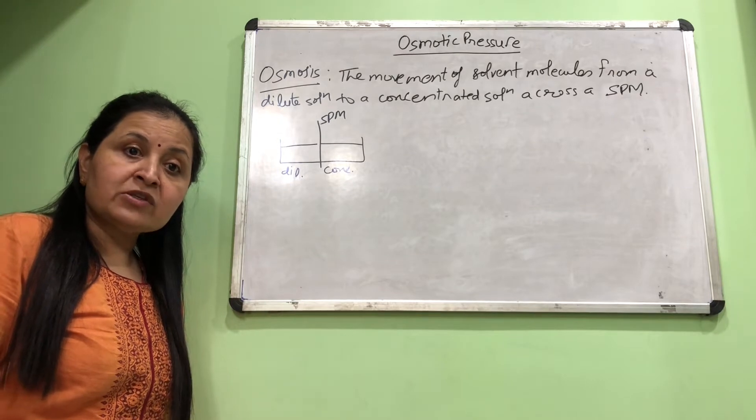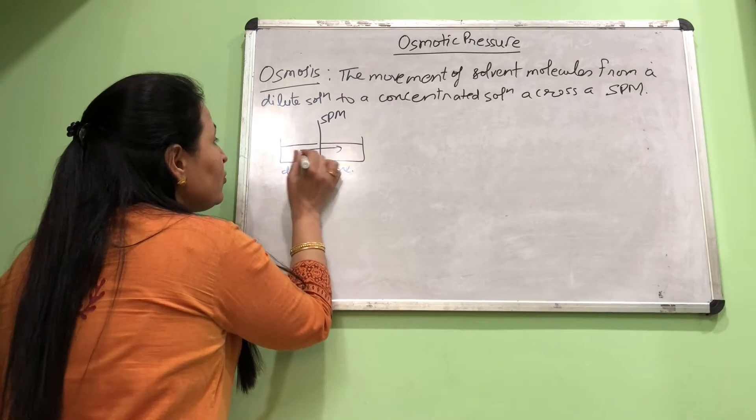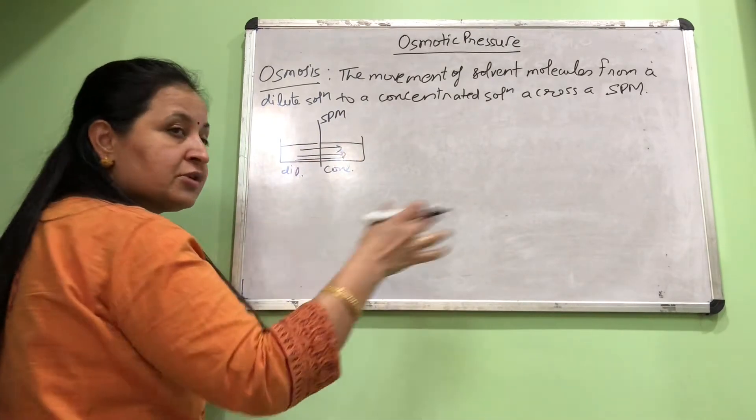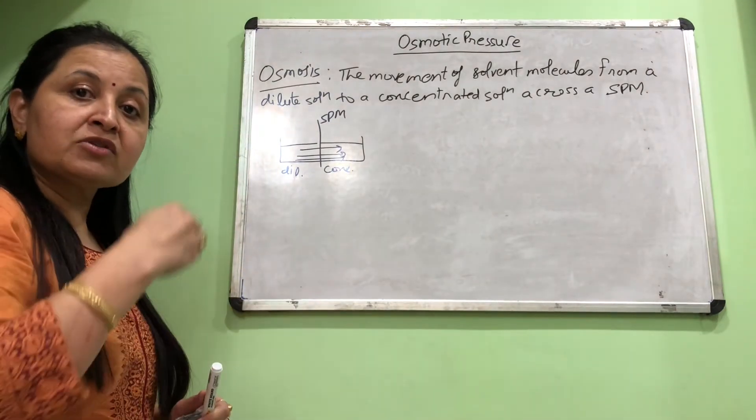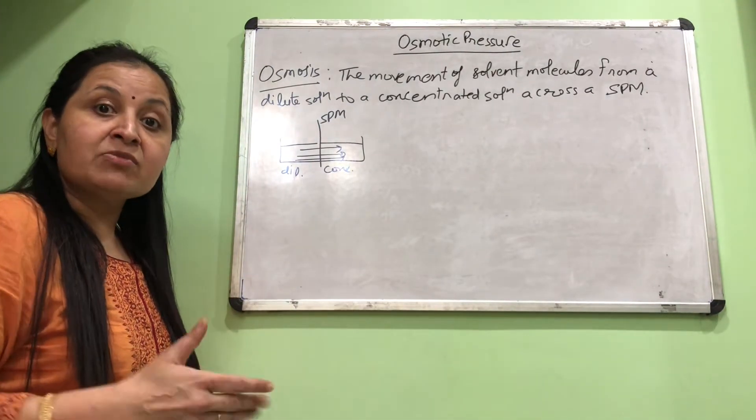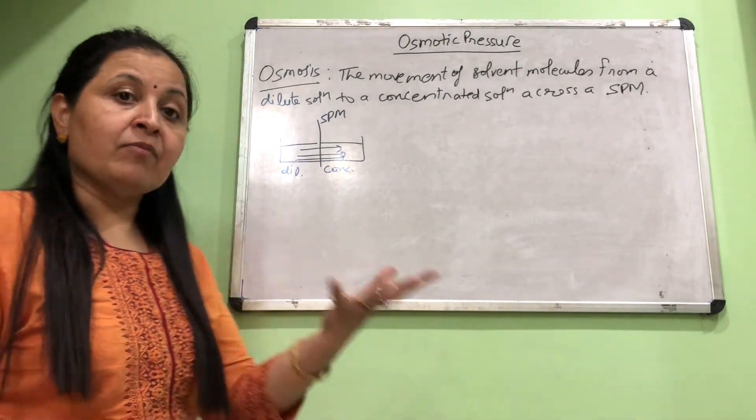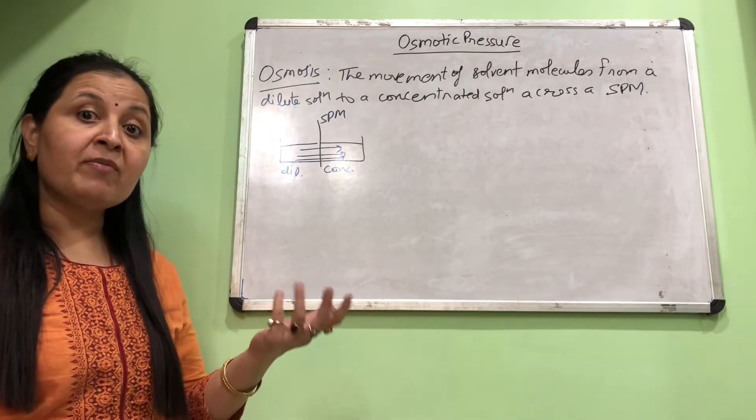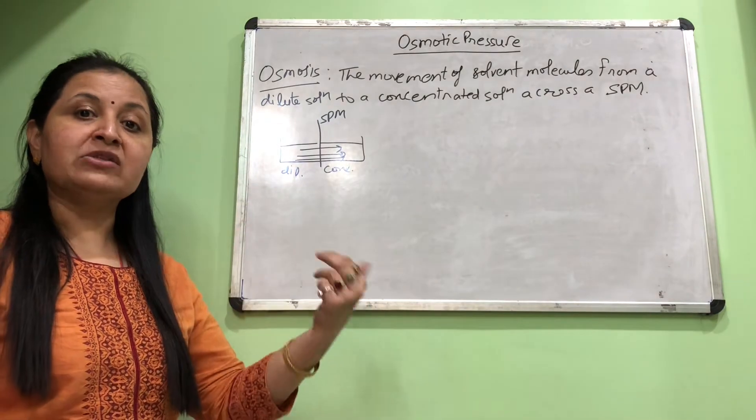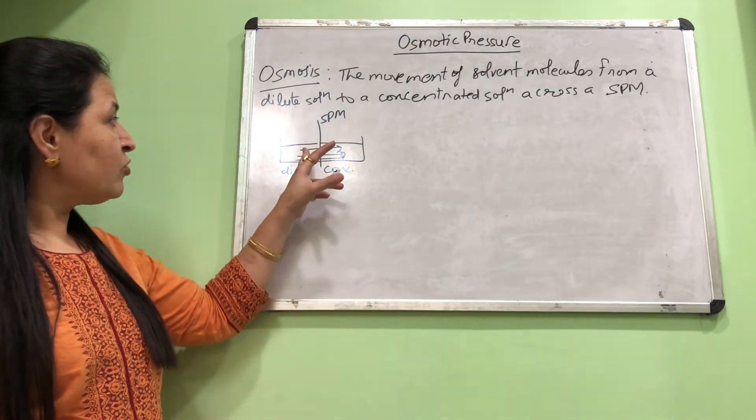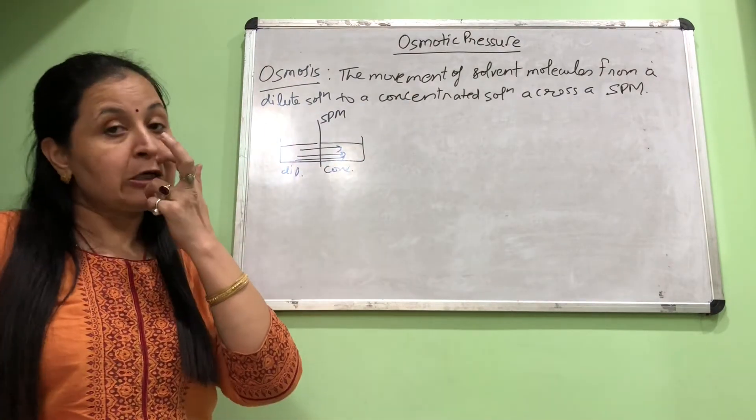So what happens when we place these two solutions together? The water, or whatever solvent is present, starts moving towards the concentrated solution, leaving the dilute solution. Its movement starts towards the concentrated solution. This movement is called osmosis.